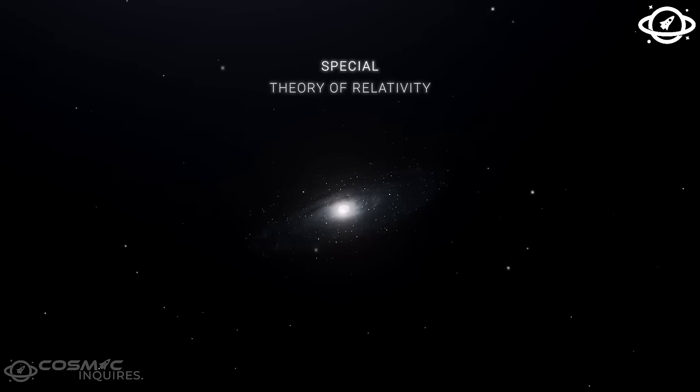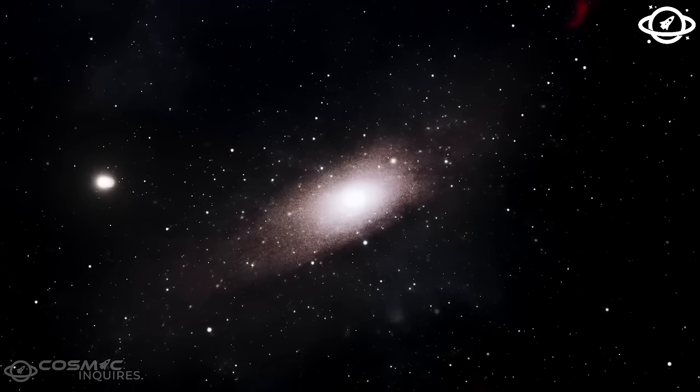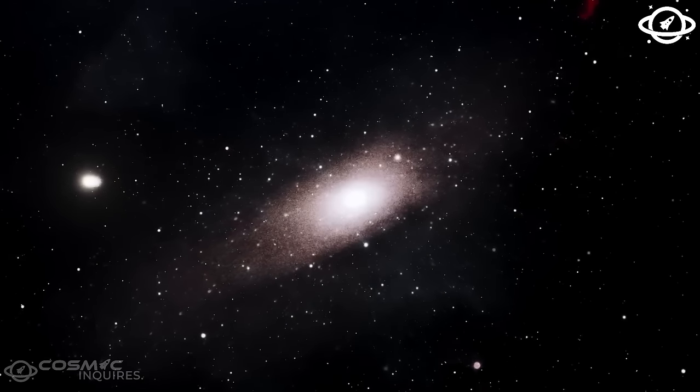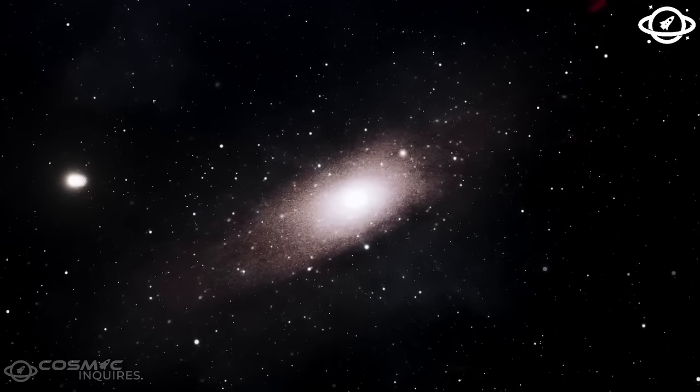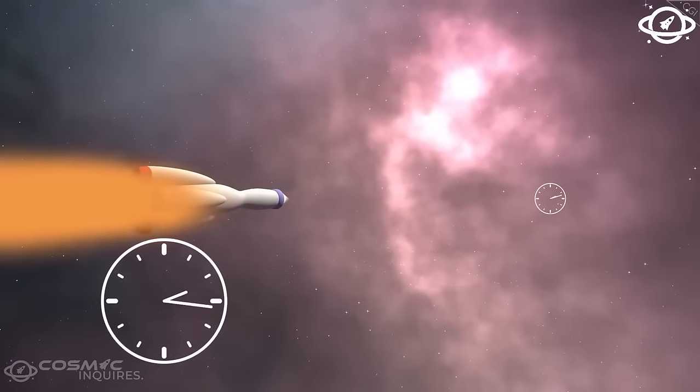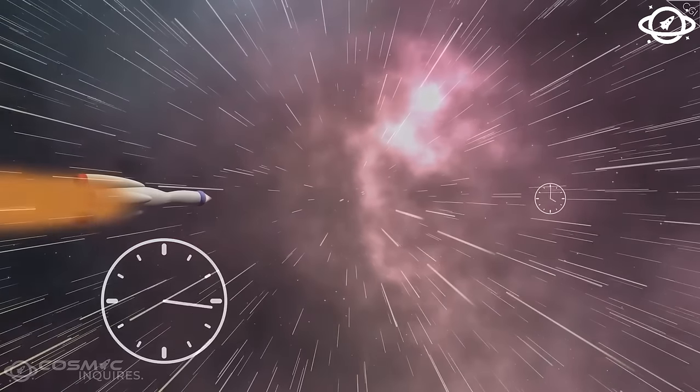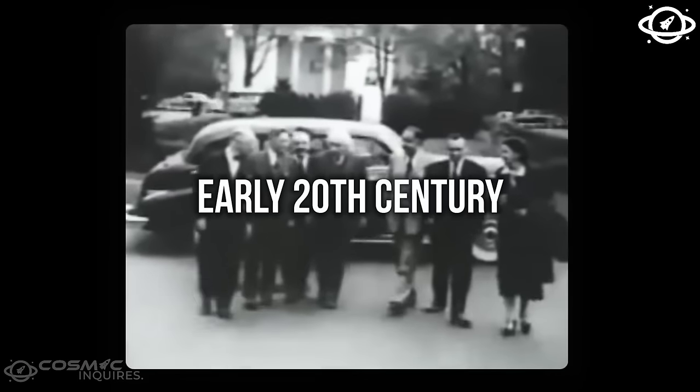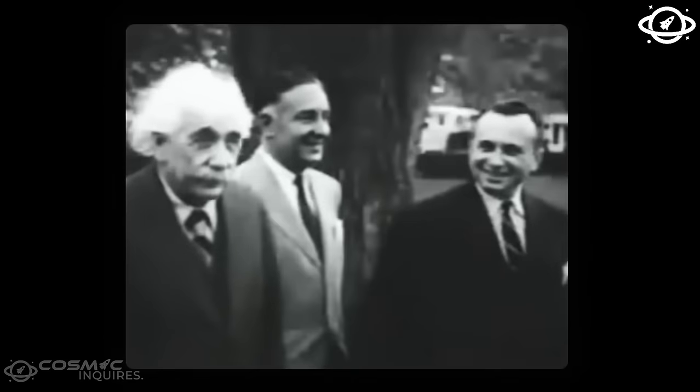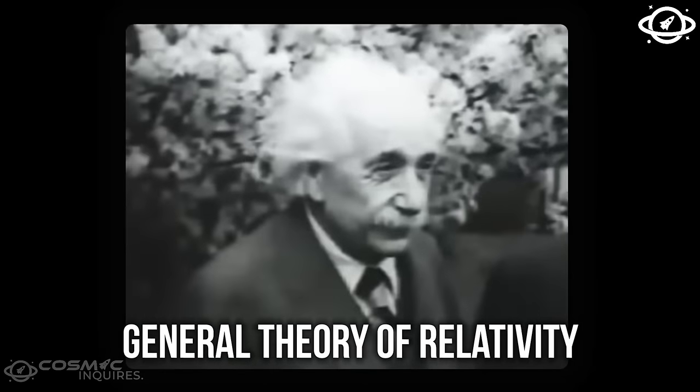Albert Einstein, a name known to many, gave us a new perspective on the universe with his theories of relativity. His work laid the foundation for our understanding of how time behaves under different conditions, particularly when we travel at extreme speeds. It all began in the early 20th century when Einstein proposed two groundbreaking theories: the special theory of relativity and the general theory of relativity.